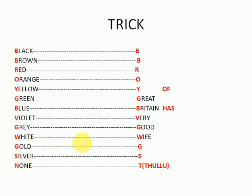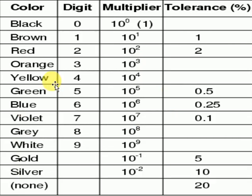So 'BB Roy of Great Britain has Very Good Wife' is the complete trick: BB = black, brown; Roy = red, orange, yellow; Great Britain = green, blue; Very Good Wife = violet, gray, white; and GST = gold, silver, none. Start counting from 0 at black and end at 9 at white. Once you memorize these colors, you can easily apply this to color code resistance — the initial colors are digits, then multiplier, then tolerance.